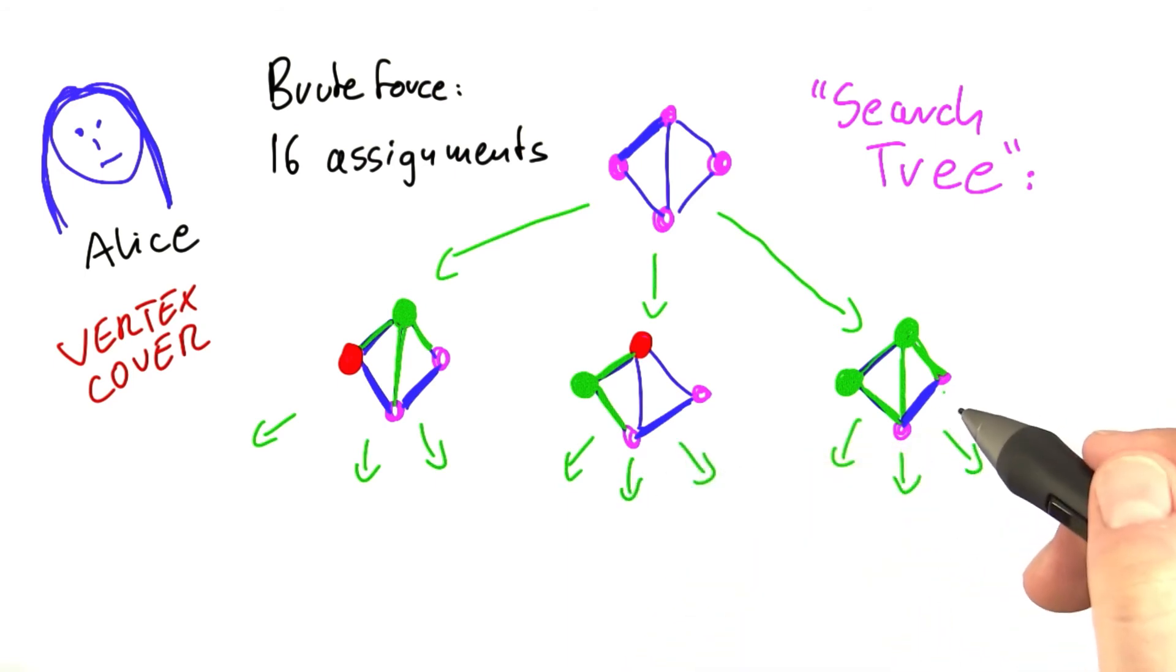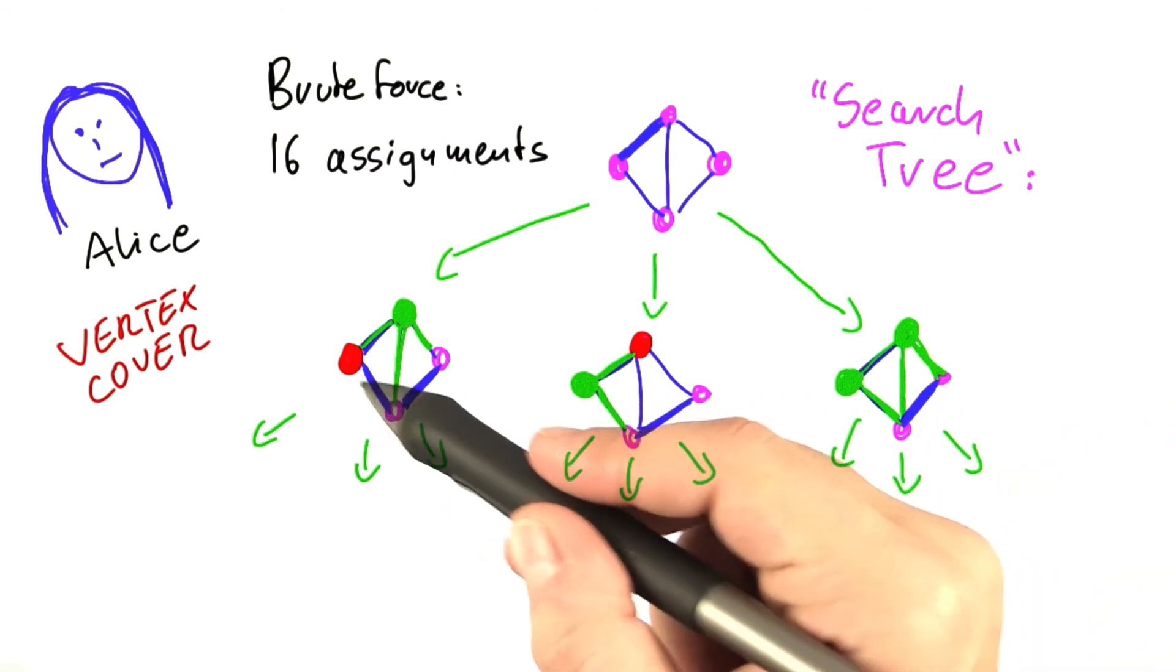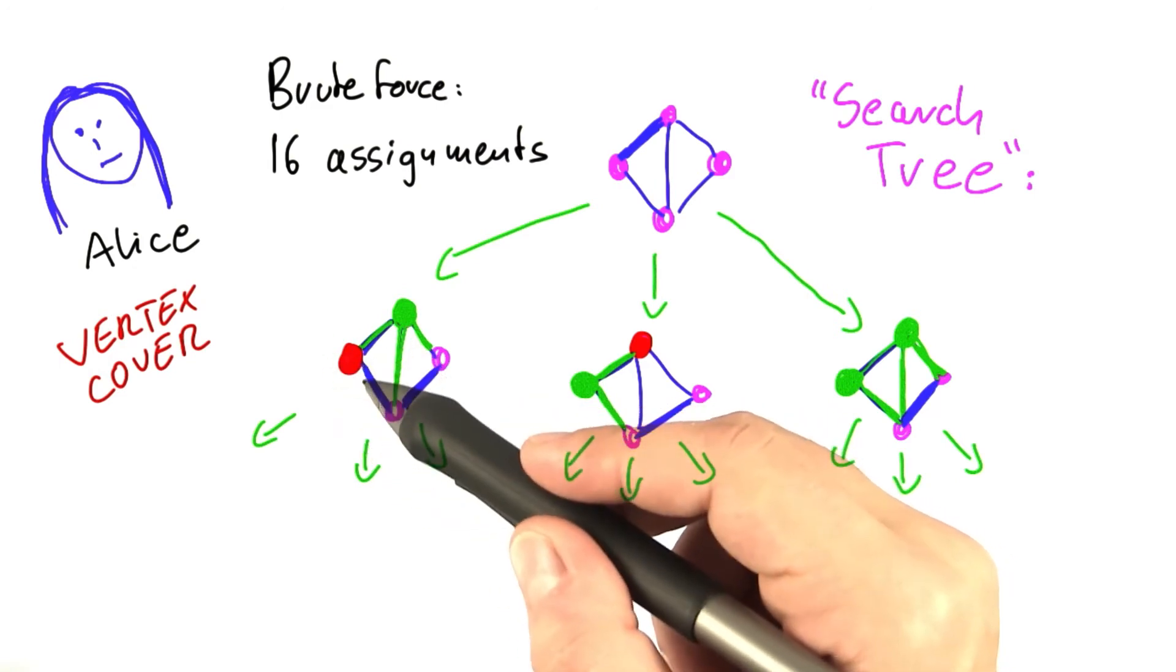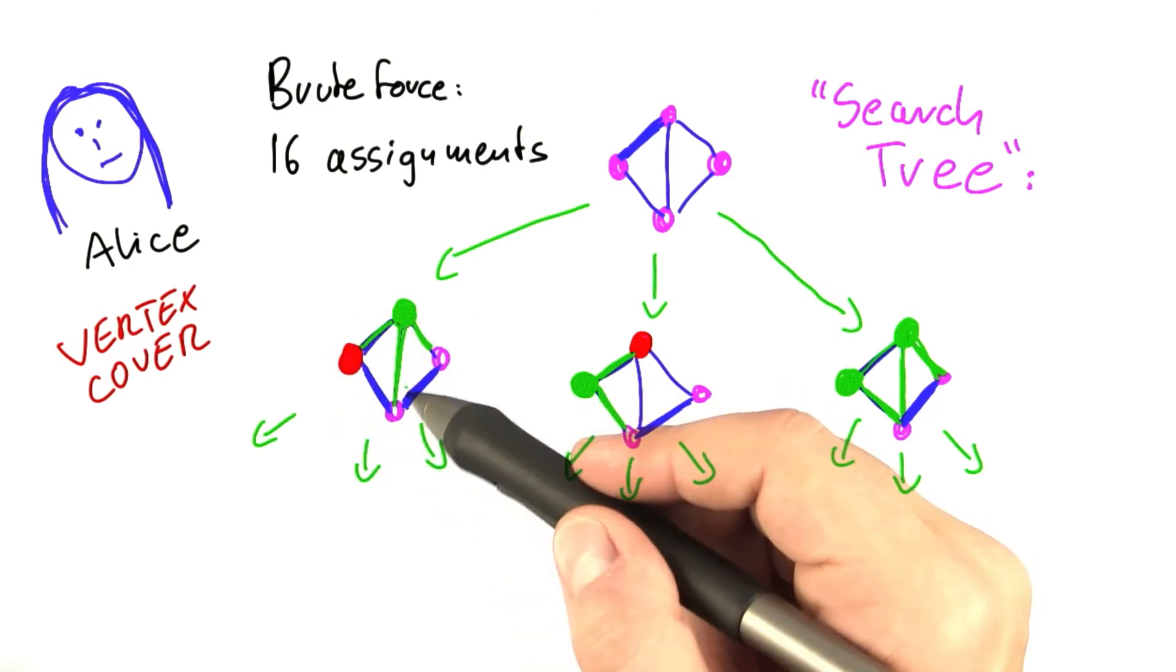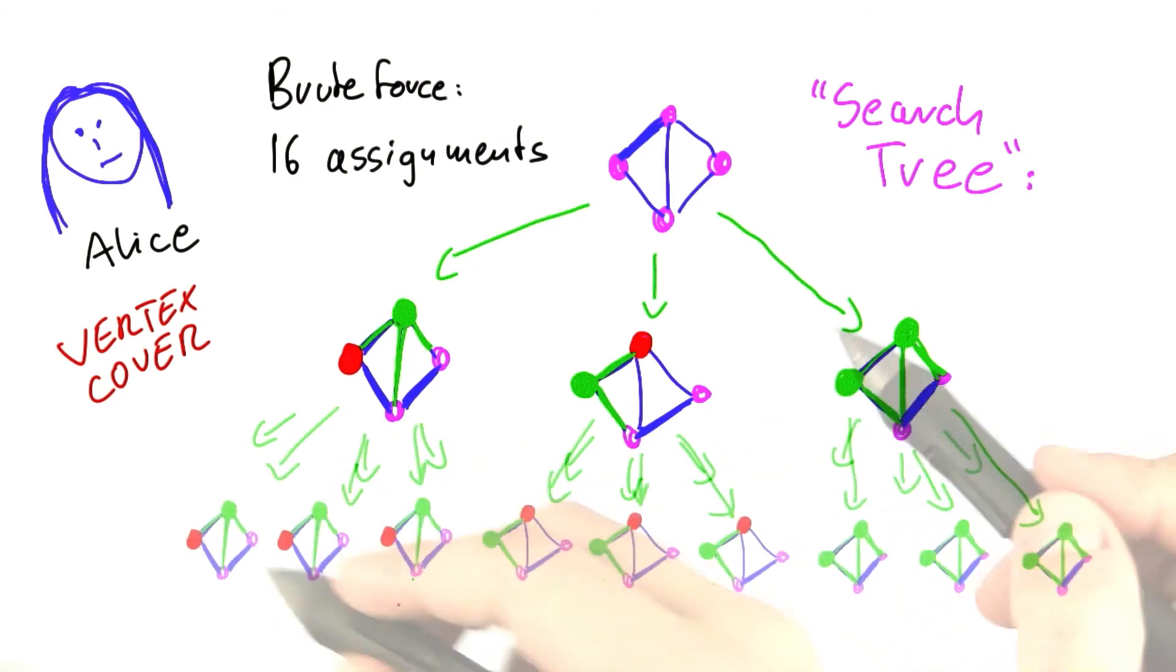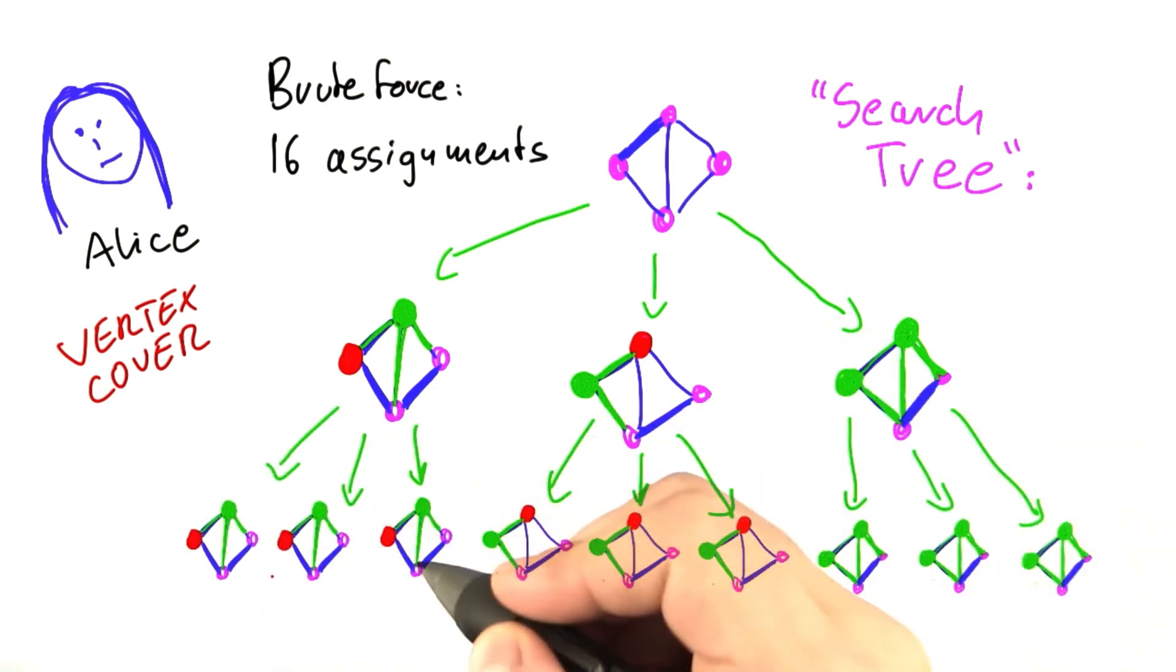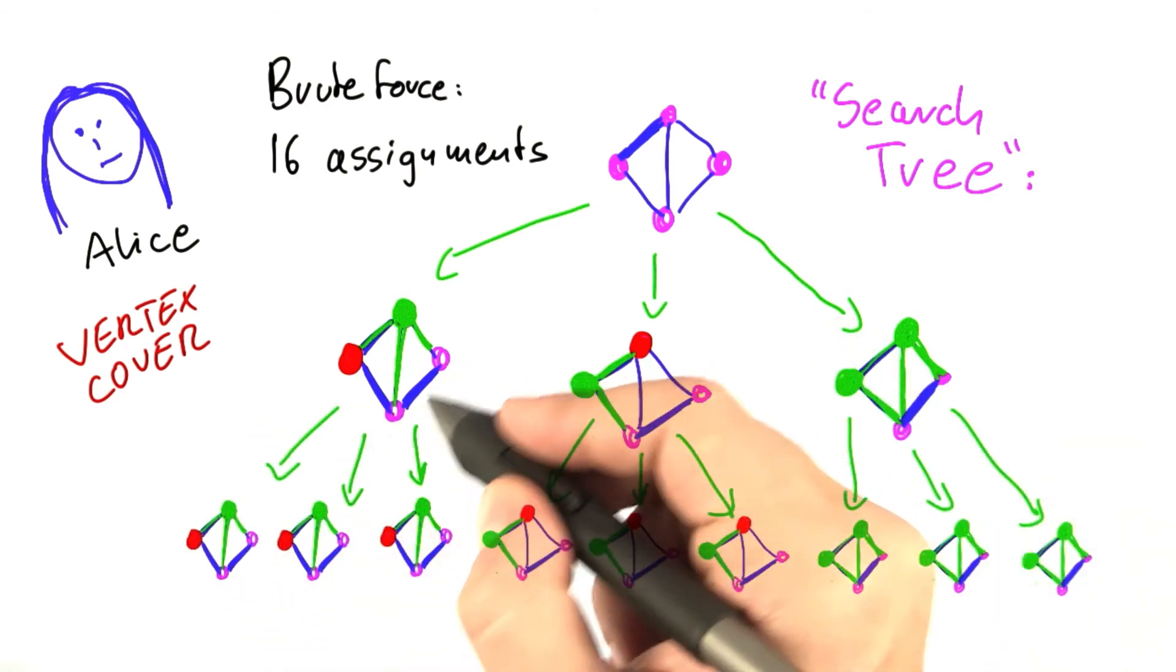Of course if we had been lucky and had chosen this edge here, the algorithm would have had a much easier choice. And actually we're later going to look at such optimizations for the algorithm. And again we're going to branch into the three cases that make sense for that edge.